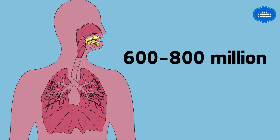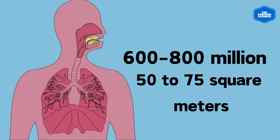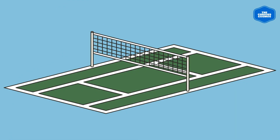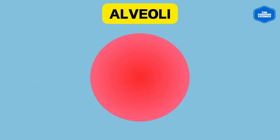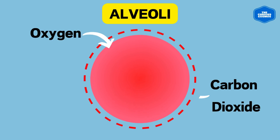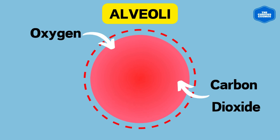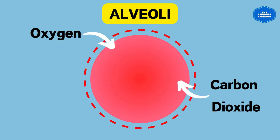The alveoli provide a massive surface area of about 50 to 75 square meters, which is roughly the size of a tennis court. Our lungs are amazing organs filled with these tiny air sacs — when we breathe in, oxygen fills them.